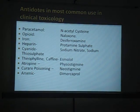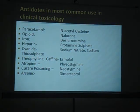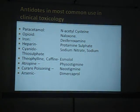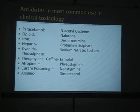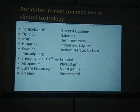For theophylline and caffeine overdose, we can use esmolol. Theophylline and caffeine are CNS stimulants and can cause tachycardia and arrhythmias. Esmolol is an ultra-short-acting beta blocker which can decrease these cardiac side effects. Atropine toxicity - the side effects of atropine include dryness, blurred vision, and CNS effects - can be counteracted by physostigmine.